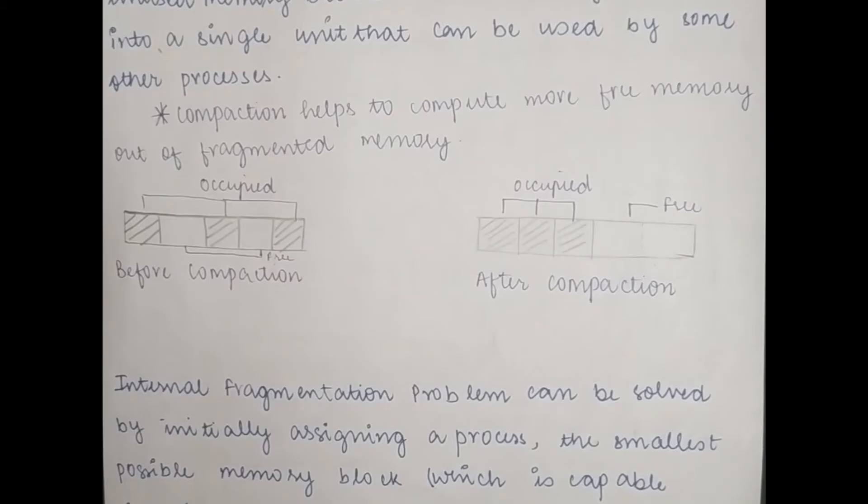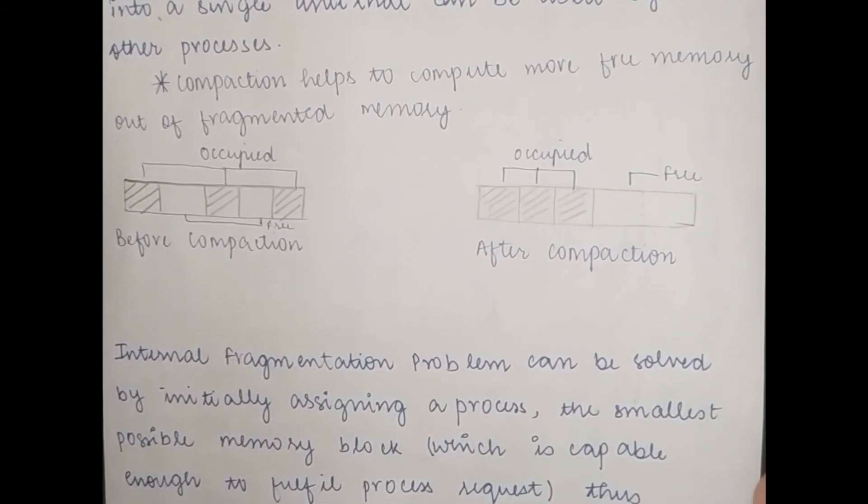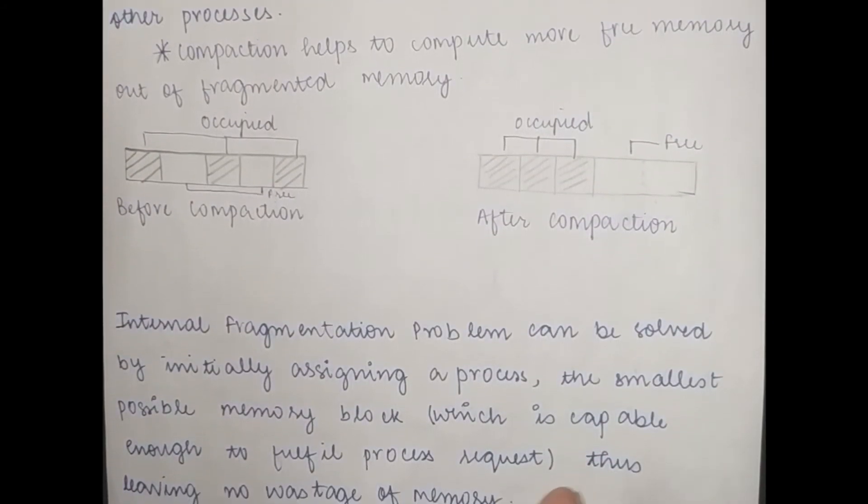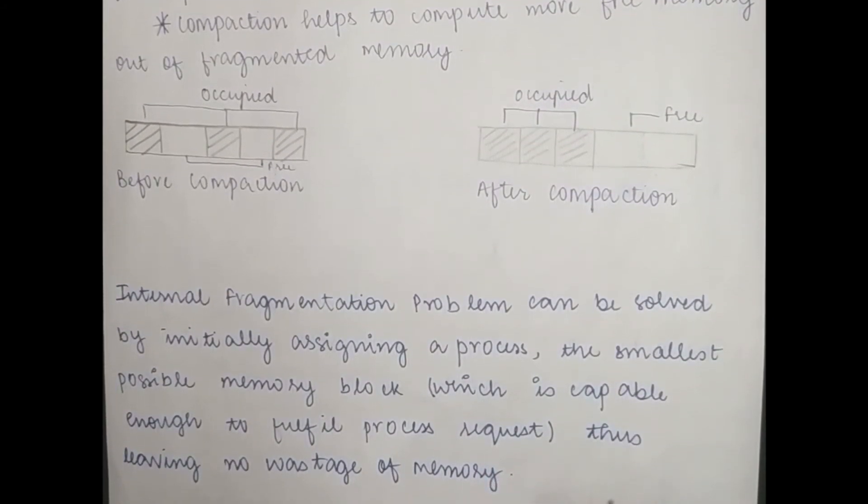Compaction is basically the solution to external fragmentation. External fragmentation was that you have total space available in memory but you can't allocate the memory with the processes just because the size of memory is not available in contiguous fashion. So that's why we can't allocate the process - compaction is the solution.